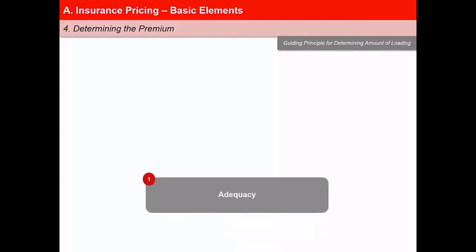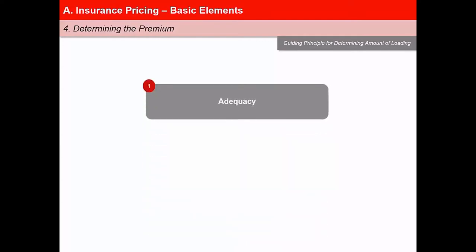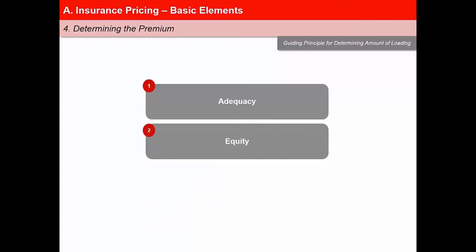Now let us learn about the guiding principles for determining the amount of loading. There are three guiding principles. First is adequacy — the total loading from all policies must be sufficient to cover the company's total operating expenses, provide a margin of safety, and contribute to the profits or surplus of the company. Second is equity — expenses and safety margins should be equitably apportioned among various kinds of policies depending on type of plan, age, and term, so that each class of policy pays for its own costs and does not subsidize another.